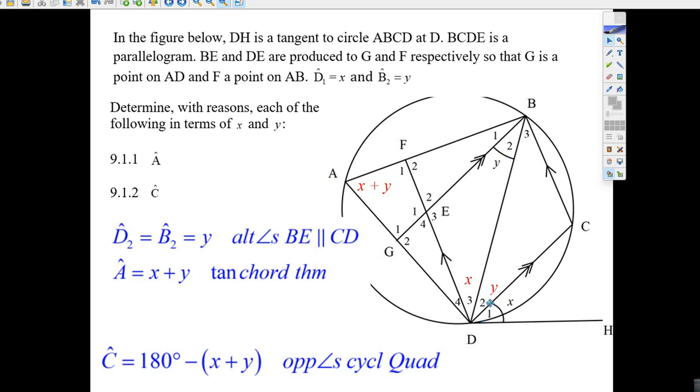Now it should make sense that D₂ equals B₂, and since B₂ is y, they both equal y. That's alternate angles because of the parallel lines BE and CD. So we've got those two are y.